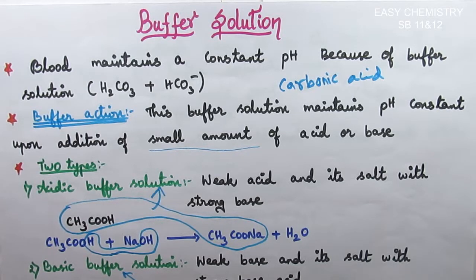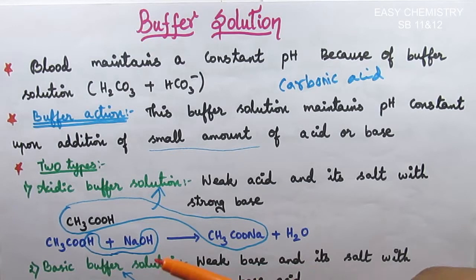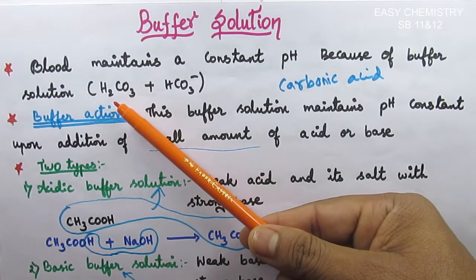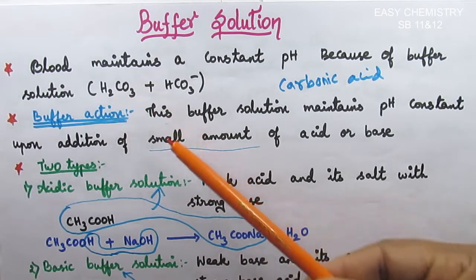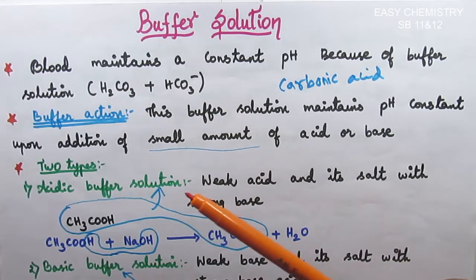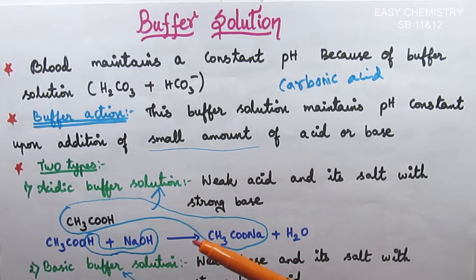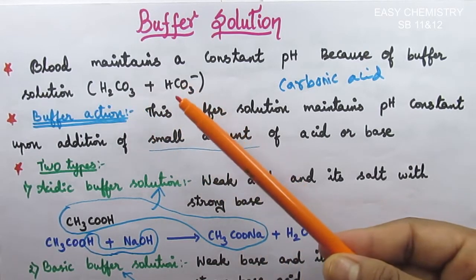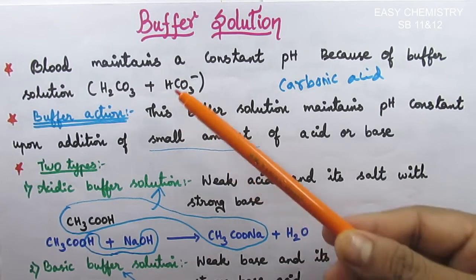Buffer solution is a combination of acid and its salt. pH is very important. For example, if we talk about blood, H2CO3 is carbonic acid — it is a bicarbonate. Blood maintains constant pH because of buffer solution. That is carbonic acid and its salt, HCO3 minus — sodium bicarbonate.